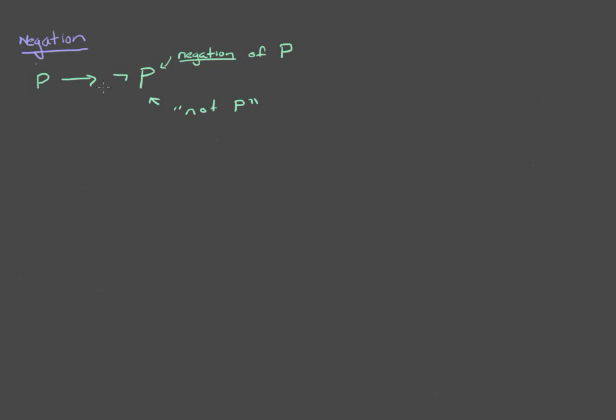Okay, so what is this? This is just the statement that takes the opposite truth value of P. So when P is true, this statement is false, and when P is false, this statement is true.